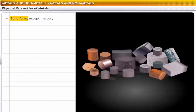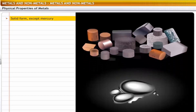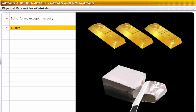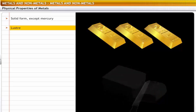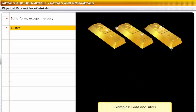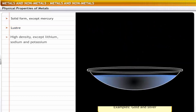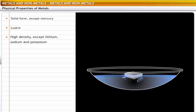All metals are solids at room temperature except mercury, which is a liquid. All metals are lustrous — metal surfaces shine when they are freshly cut. For example, gold and silver are popularly used for making jewelry because of their luster. Metals have high densities and therefore tend to sink in water.